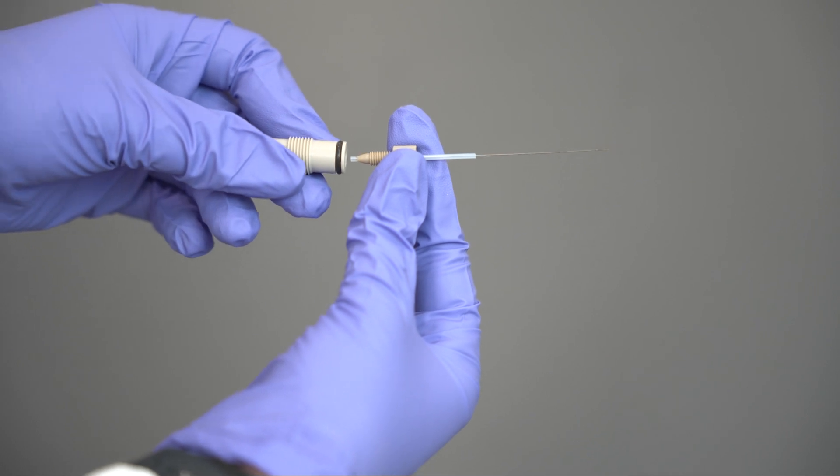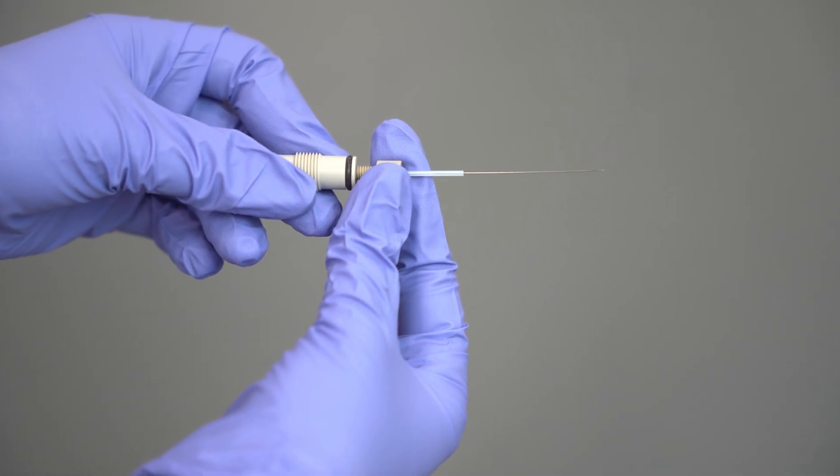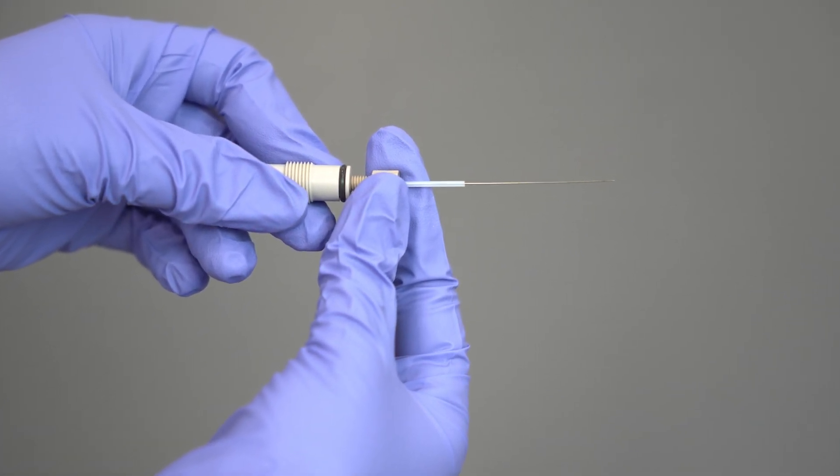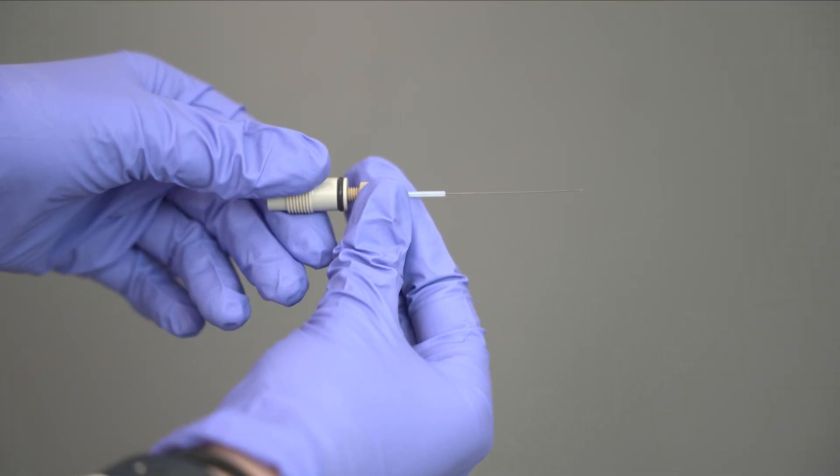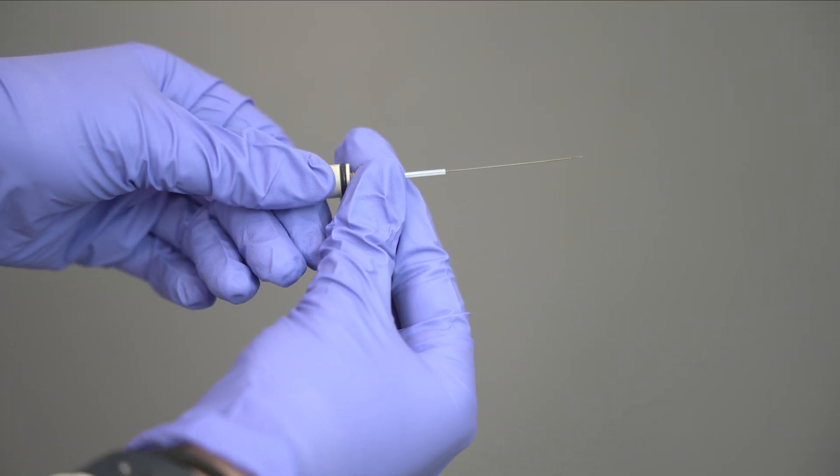Now the new capillary assembly can be mounted into the ESI coupling. This must be done on the side of the ESI coupling with the black O-ring. Now you can screw the capillary assembly into the coupling and finger tighten.